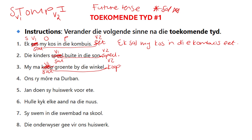Let's try the next one. What is my verb in the sentence? 'Ons ry môre na Durban.' 'Ry' is my verb 1, which will then go to the end of my sentence in the toekoms tyd and becomes verb 2. So 'ry'. And my verb 1 will be 'sal'. 'Ons sal môre na Durban ry.' Full stop.